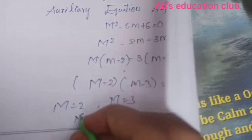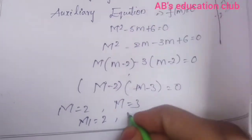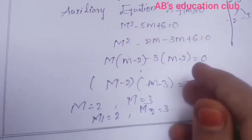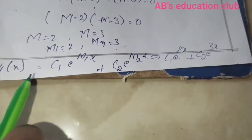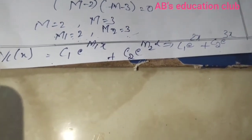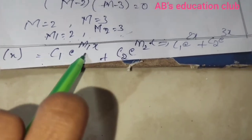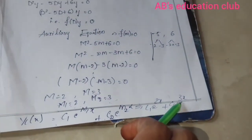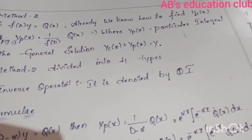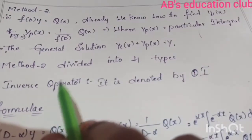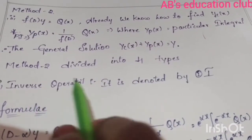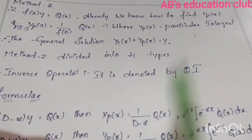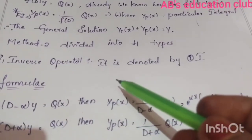The roots are m1 = 2 and m2 = 3 — two distinct real roots. Therefore the complementary function is yc(x) = c1·e^(2x) + c2·e^(3x). Now Method 2 is divided into 4 types. The first type uses the inverse operator, denoted 1/f(D), with a specific formula.